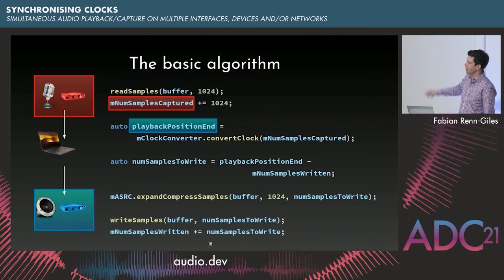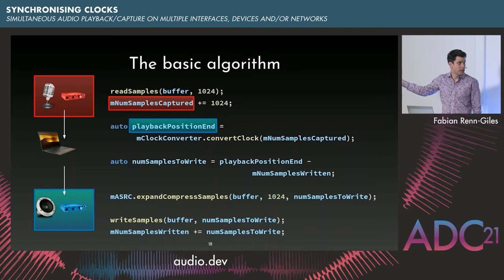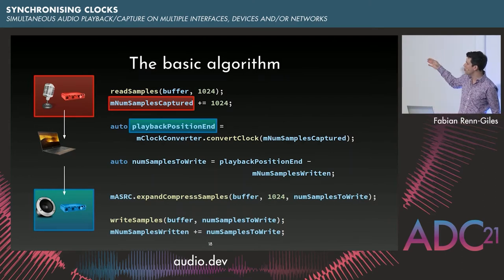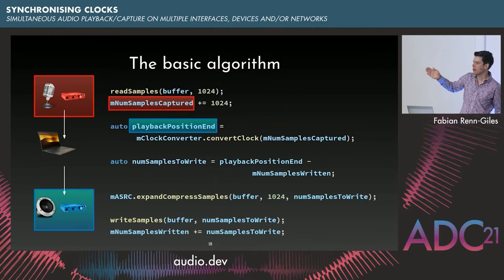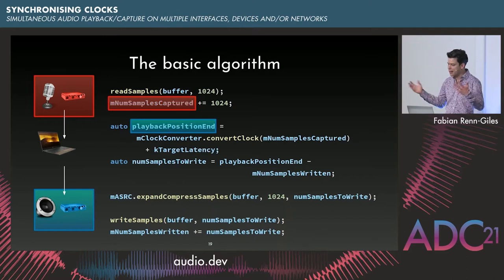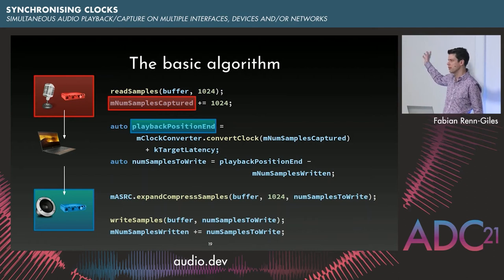There's one tiny nitpick: if done exactly as shown, you'd instantly get an underrun. The playback position endpoint points to the time when the current buffer capture ended — which is in the past by the time you write samples, since you need time for processing. So I add some target latency to account for that. Depending on how fast your computer is, this target latency can be lower or higher.